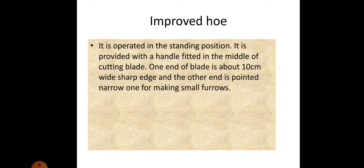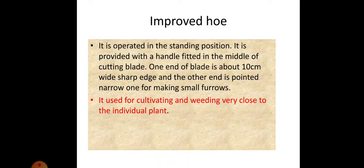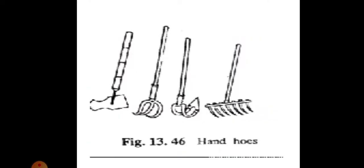Improved hoe: it is operated in the standing position and is provided with a handle fitted in the middle of the cutting blade. One end of the blade is about 10 cm wide with a sharp edge, and the other end is a pointed narrow one for making small furrows. It is used for cultivating and weeding very close to individual plants. About 0.04 hectare per day area is covered.